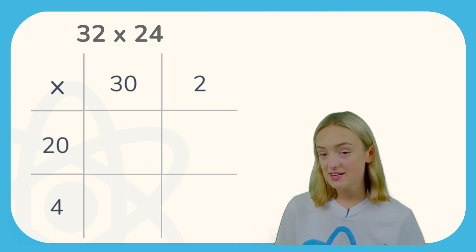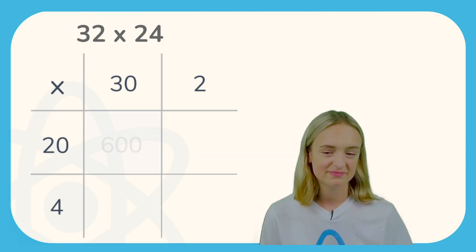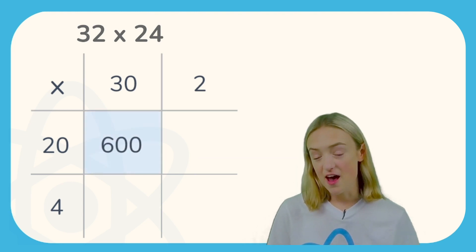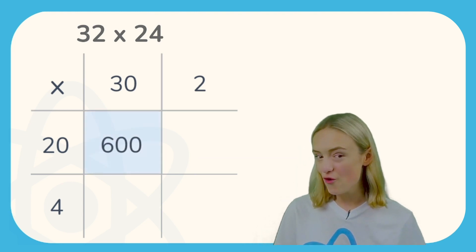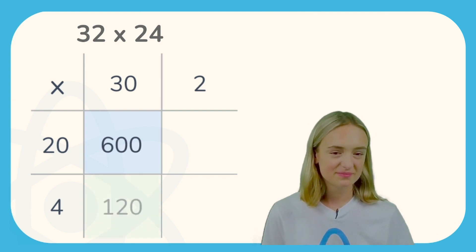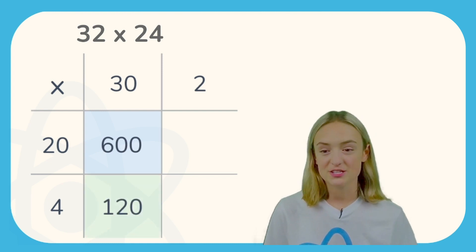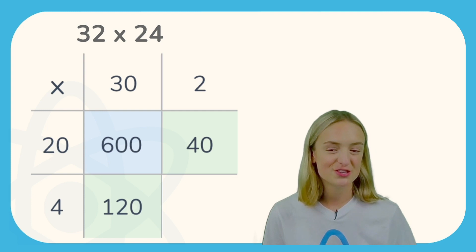So to start, 30 times by 20 is 600. Now 30 times by 4 is 120. Thirdly we need to times 20 by 2 which is 40. And last but not least, 2 times by 4 is of course 8.